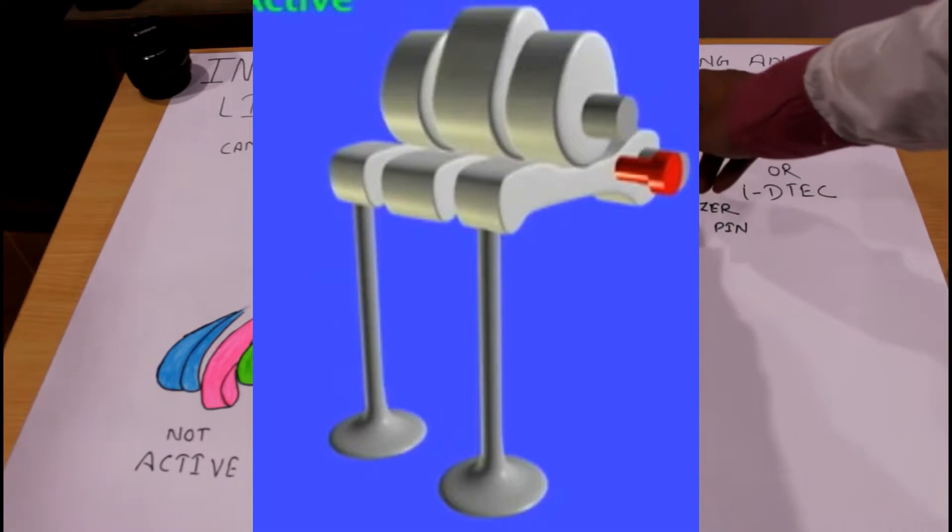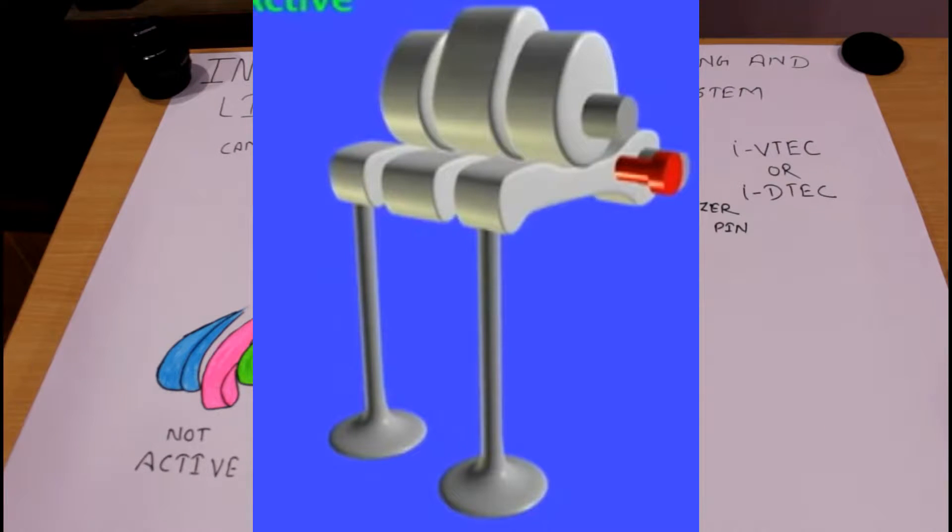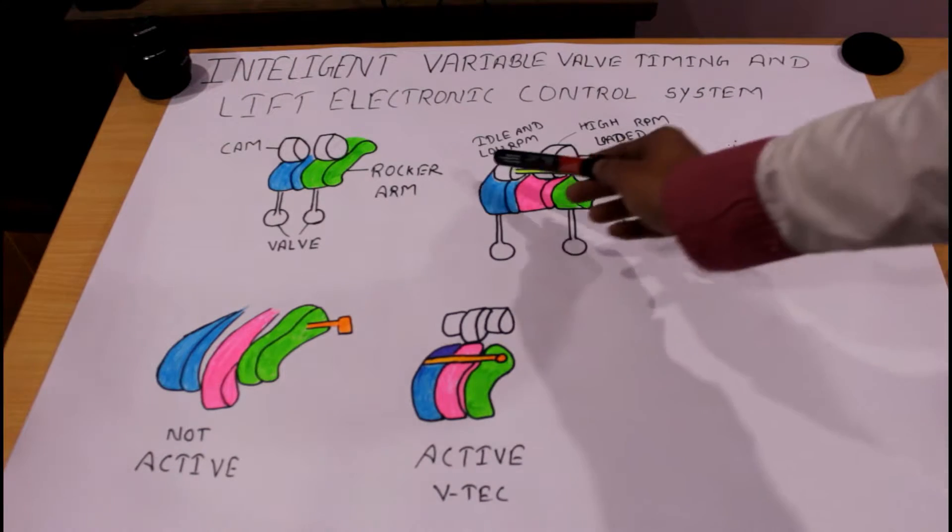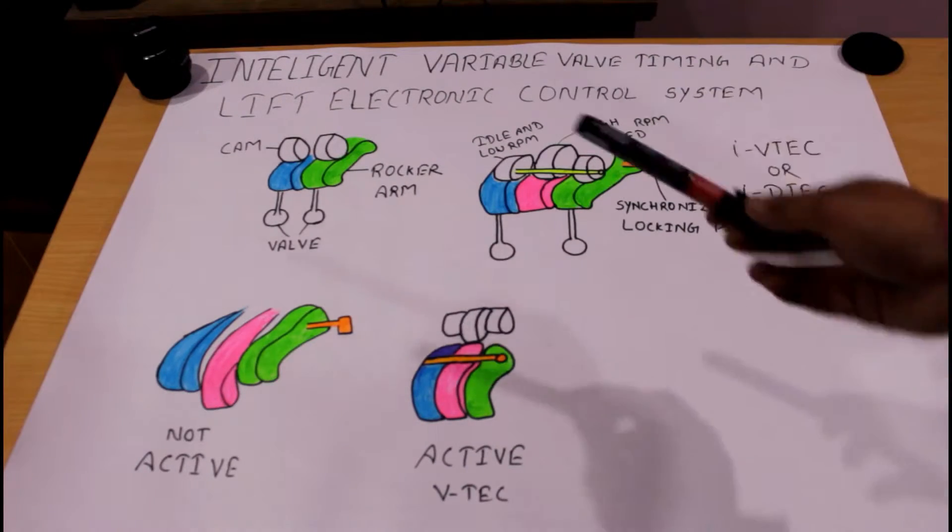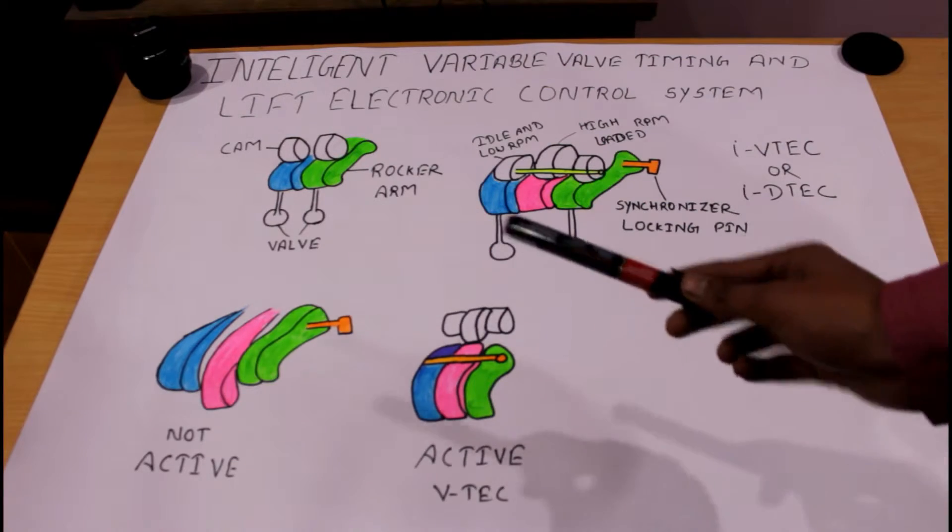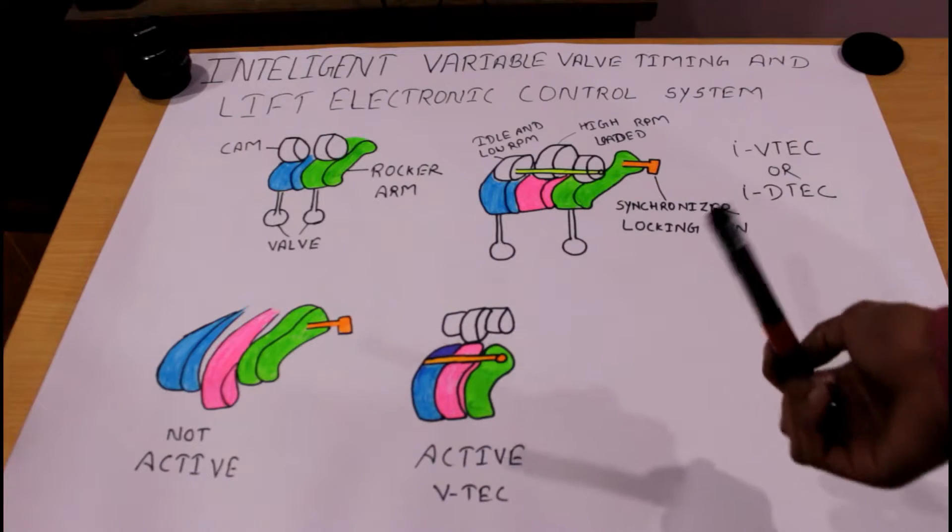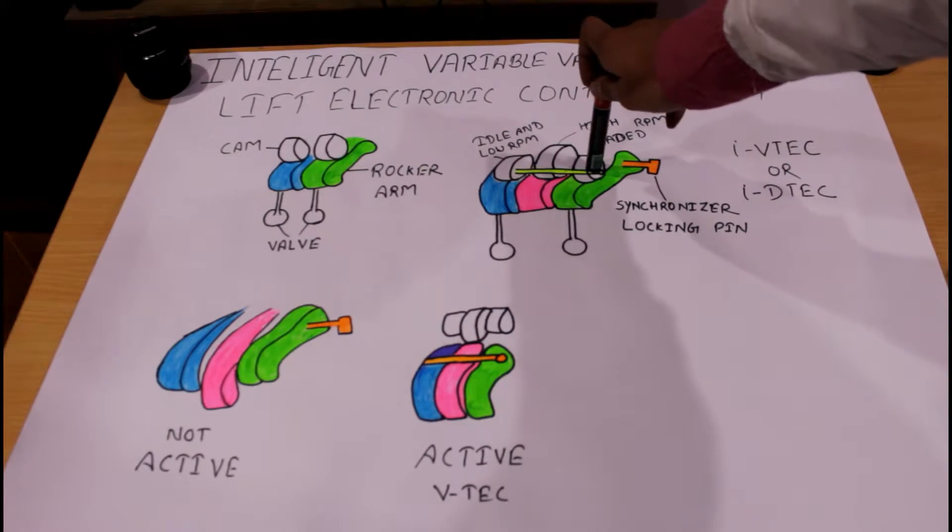Assume if these idle or low RPM cams rotate, at that time the rocker arms go downward or upward. Because of the small size of these cams, the rocker arm goes downward but less compared to the rocker arm used for VTEC.